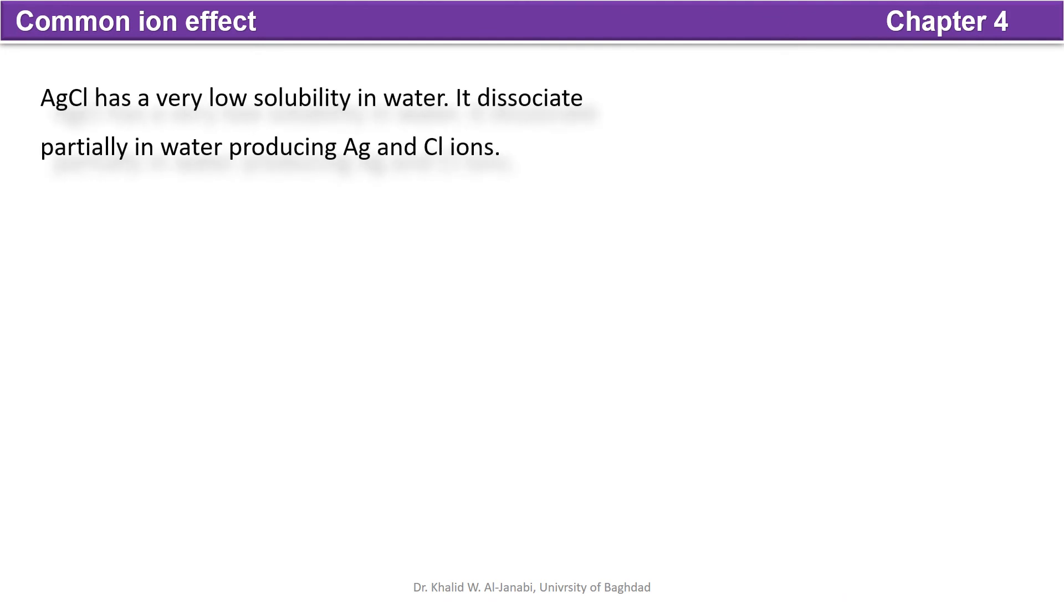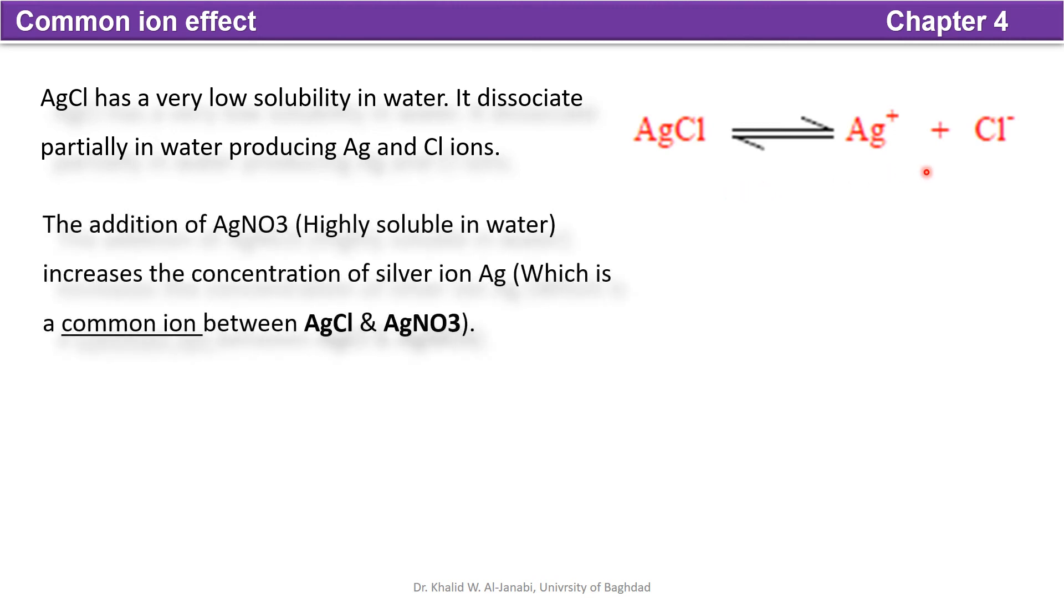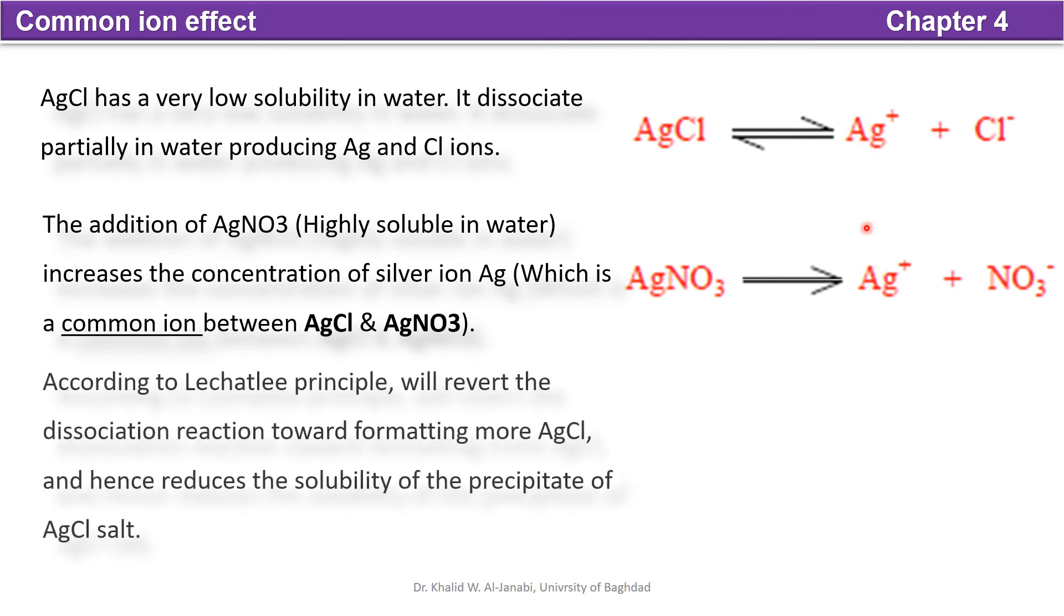This is another example. AgCl in general has a very low solubility in water, so it's partially dissociated. By the addition of AgNO3, silver nitrate, silver nitrate will dissociate to produce silver ion. Silver ion here is common with the first reaction, so this will decrease the solubility.